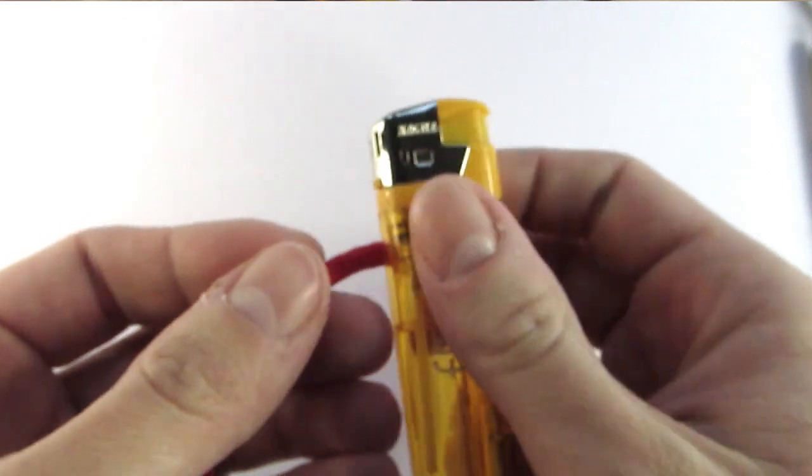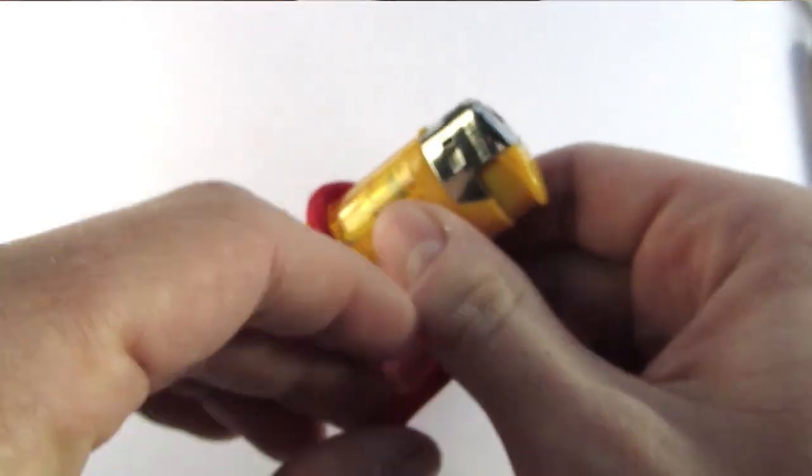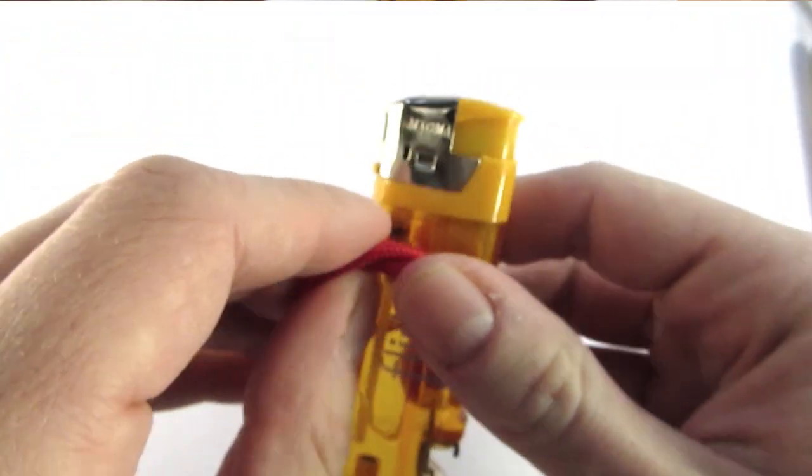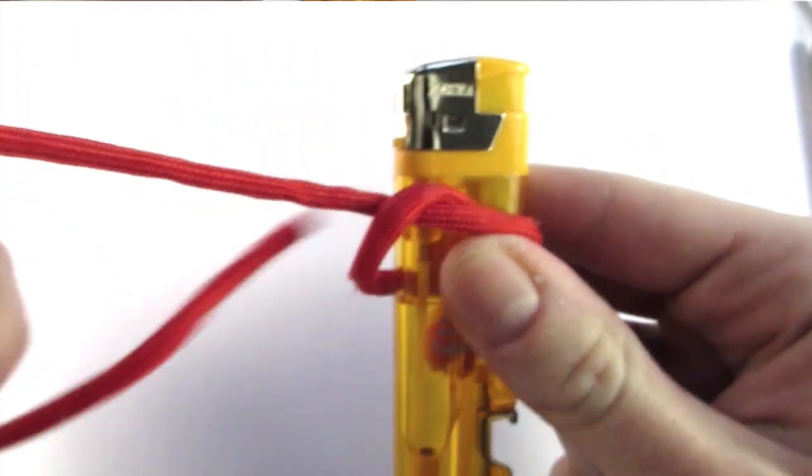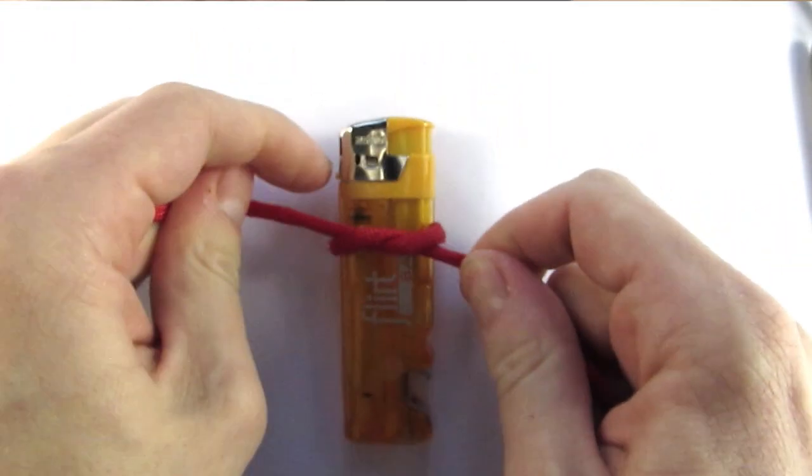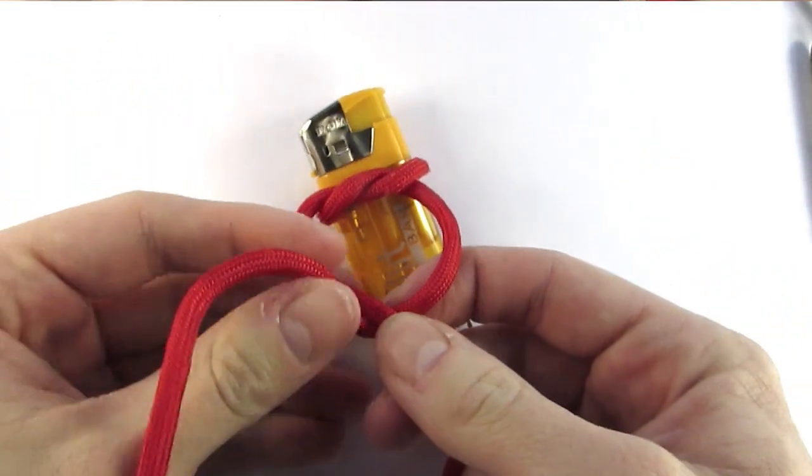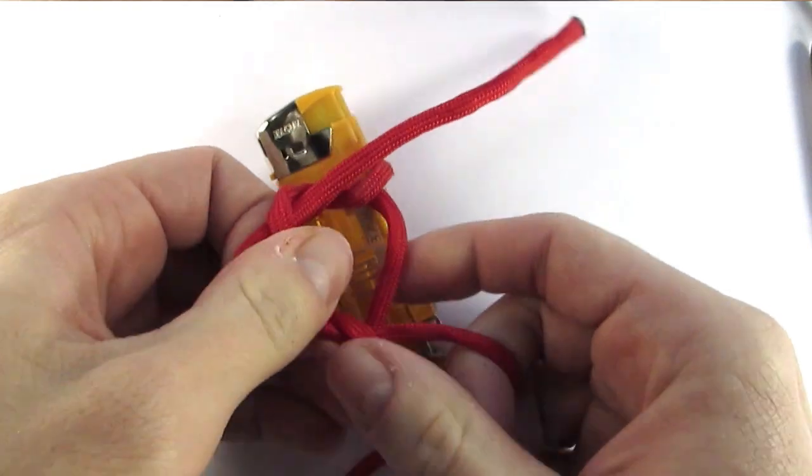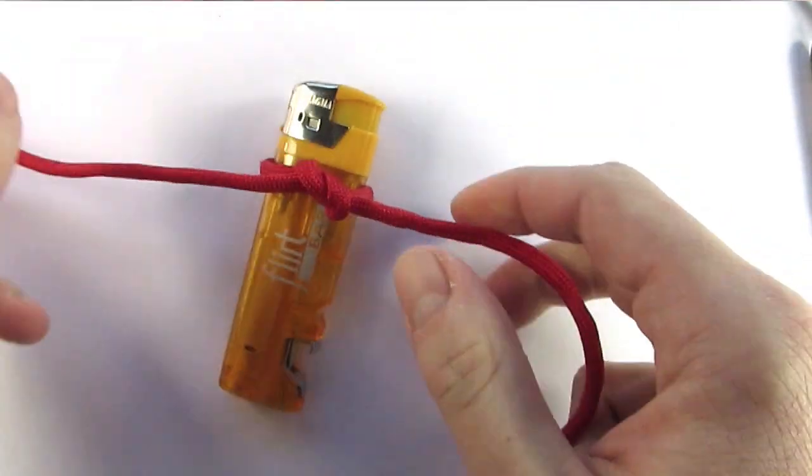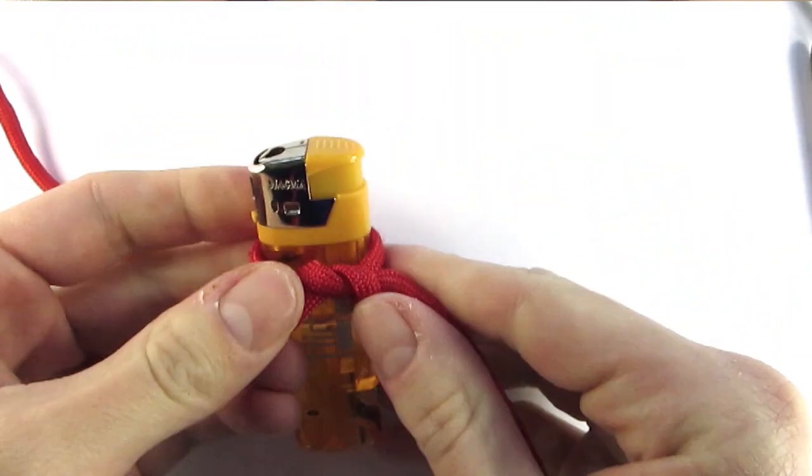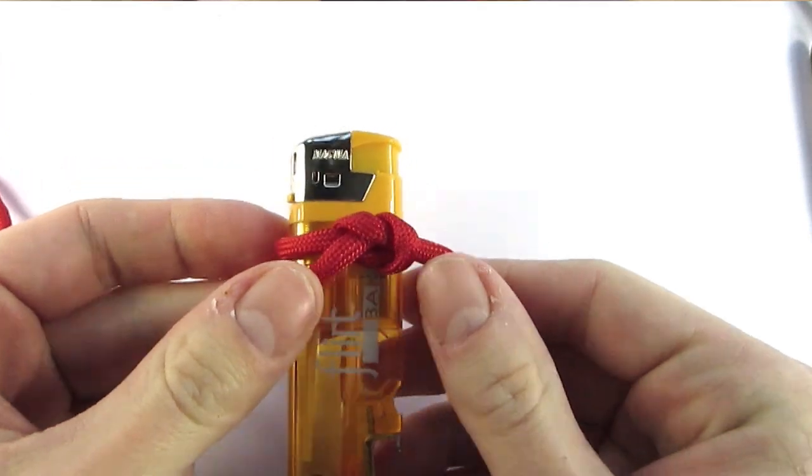So I'm going to attach it using two half knots or a square knot. You can attach it with the help of a cord lock as well if you have one of those around. So there, we have secured the cord.